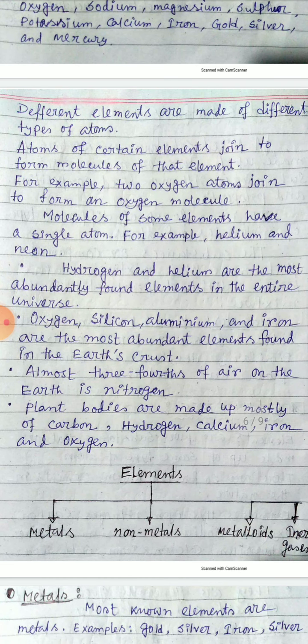Different elements are made up of different types of atoms, and atoms of a certain element join to form the molecule of that element. For example, two oxygen atoms join to form an oxygen molecule. Some molecules exist as a single atom — for example, helium, neon, argon, and krypton exist as single atoms.